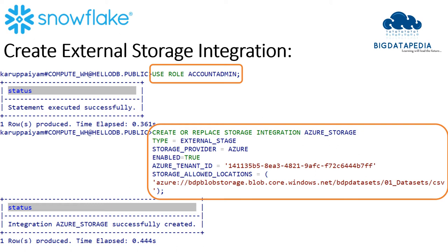Enabled is set to true - these are common properties to interact with your storage integration on Snowflake. After that I have to pass my tenant ID and the storage path where the data is available. Once this command is executed, the storage integration will be created with the name azure_storage.